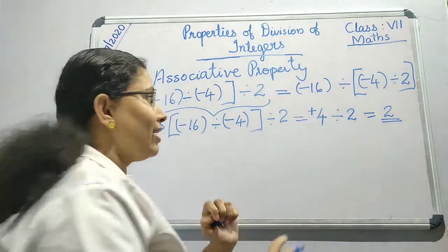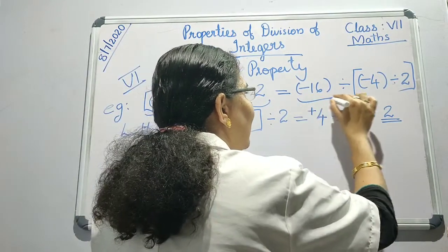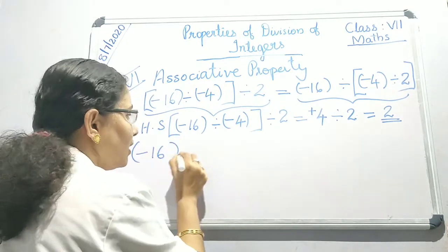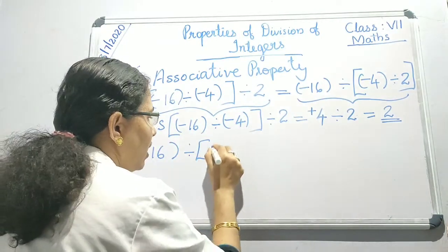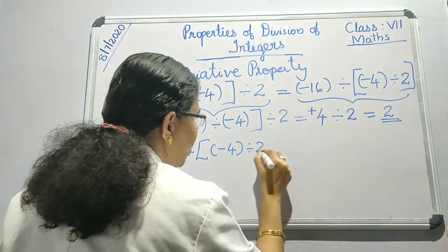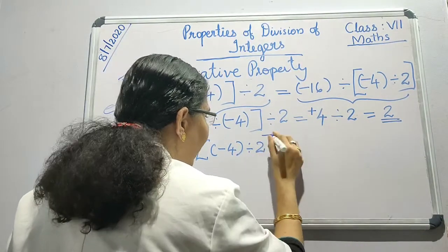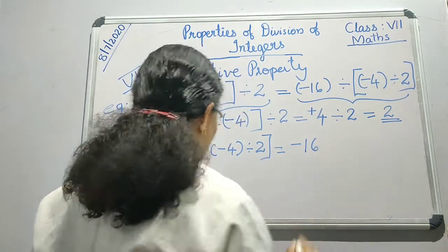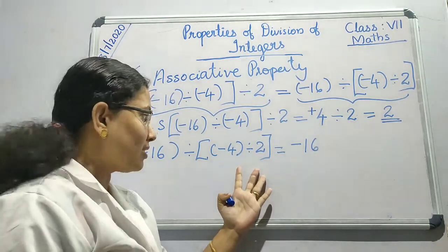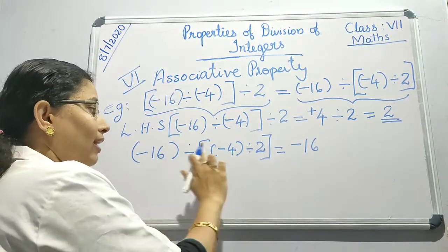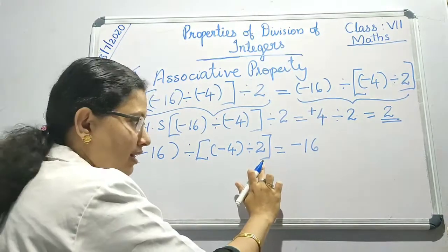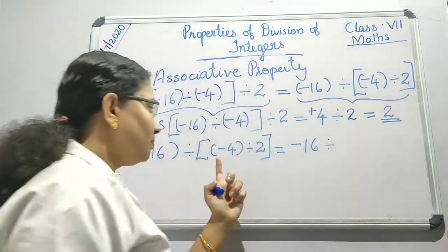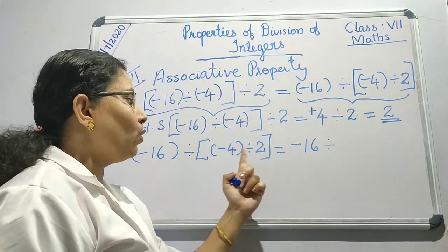Now let us take the right hand side. Let me write that: minus 16 divided by, then the bracket, minus 4 divided by 2. So first, this is A, this is B, and this is C. We have to solve this inner bracket: minus 4 divided by 2.